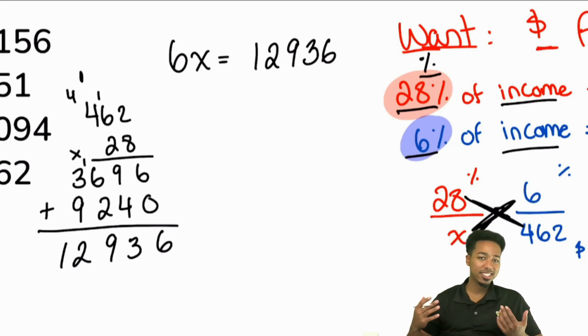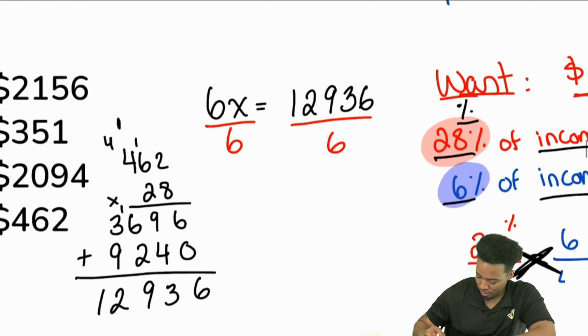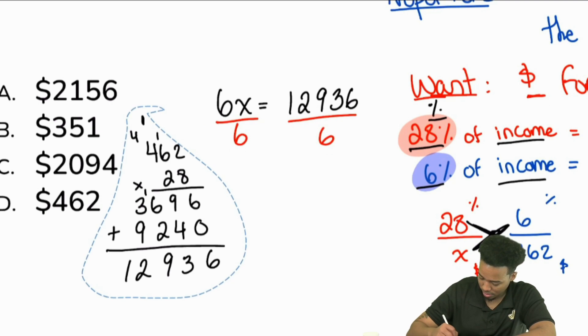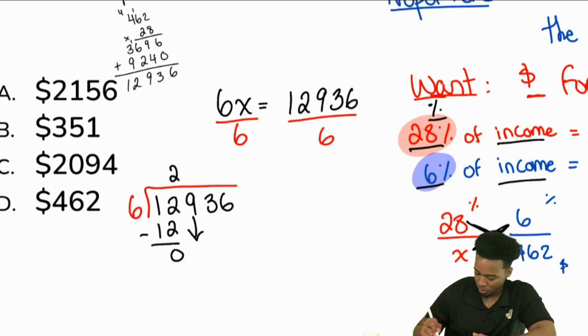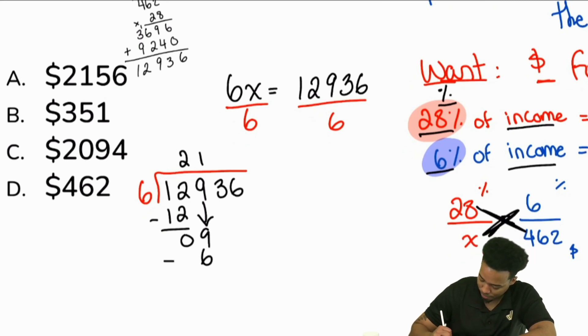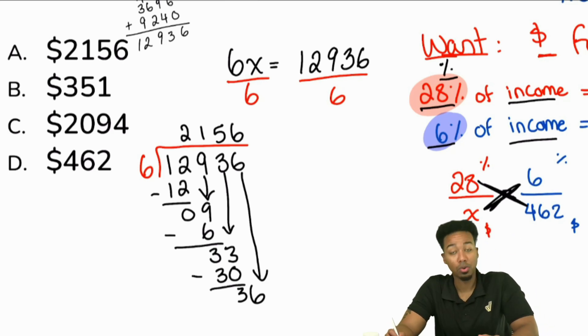You know, guys, no matter what the number is, same process. We cross-multiplied and now we're going to divide. Sure, it was a massive number, whatever, but we're good. We're going to divide both sides by 6. And once we do that, we can do that off to the side. So 6 goes into 12 two times. Then 6 goes into 9 once. Then we bring the 3 down. 6 goes into 33 five times. And then 6 goes into 36, six times. So we have 2156 there.